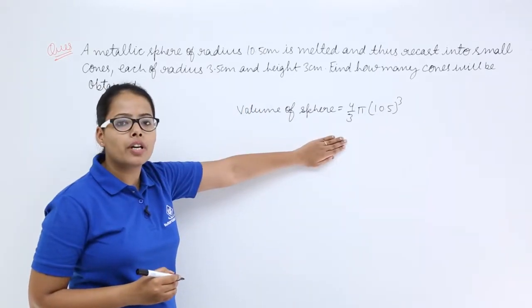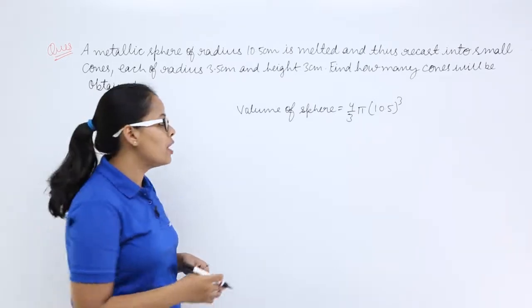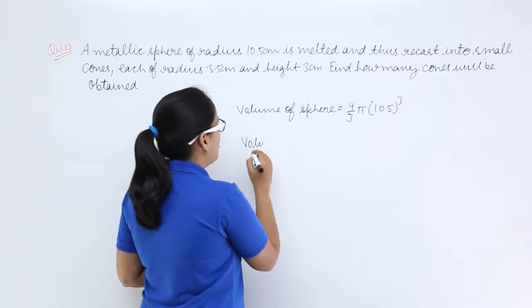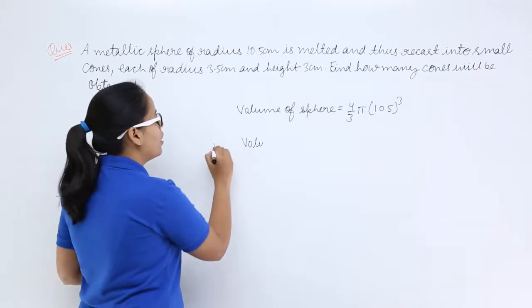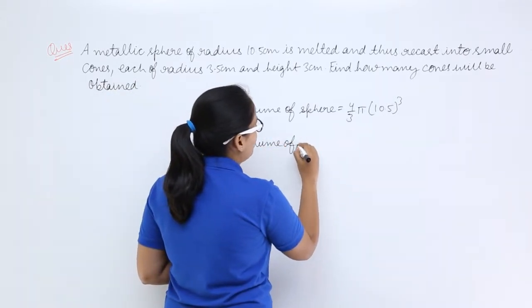Now from this volume of sphere we are recasting a number of cones. So let's suppose the number of cones recasted were n. So n into volume of a cone.